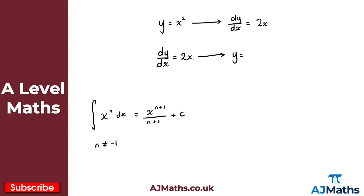So if I'm now integrating 2x with respect to x, we add 1 to the power, giving 2x to the power of 2, and then divide by that new power — just using our general result. So we divide by 2, and don't forget the constant of integration, plus c. We can simplify: 2 divided by 2 is 1, so we get x squared plus c.